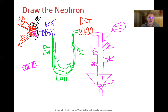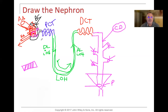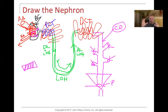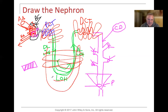All around the proximal and distal convoluted tubules, there are the peritubular capillaries. And around the loop of Henle, there is another vascular system called the vasa recta, which has more of a linear type of vasculature.